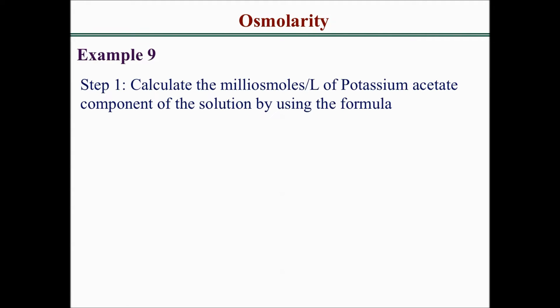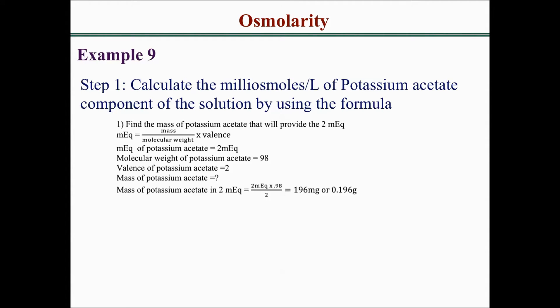Step 1: we need to calculate the milliosmoles per liter of the potassium acetate component of the solution. First, we need to find the mass of potassium acetate that will provide 2 milliequivalents, using the formula: milliequivalents equals mass over molecular weight times valence.